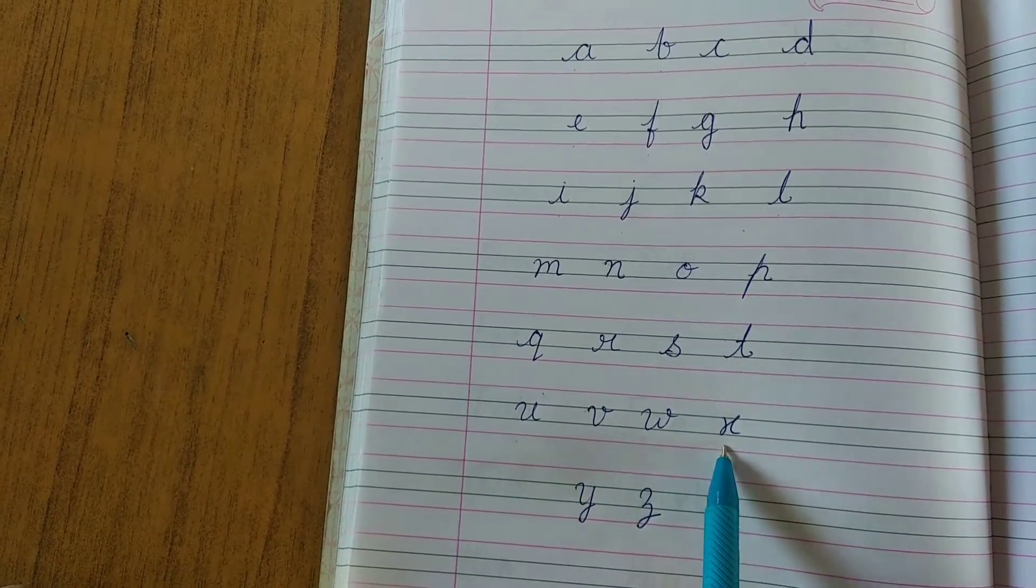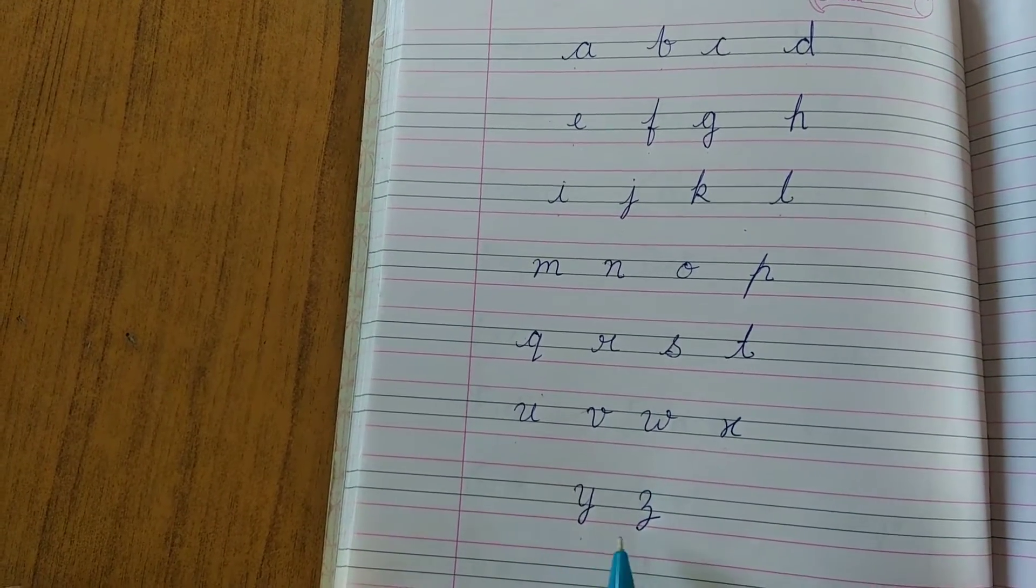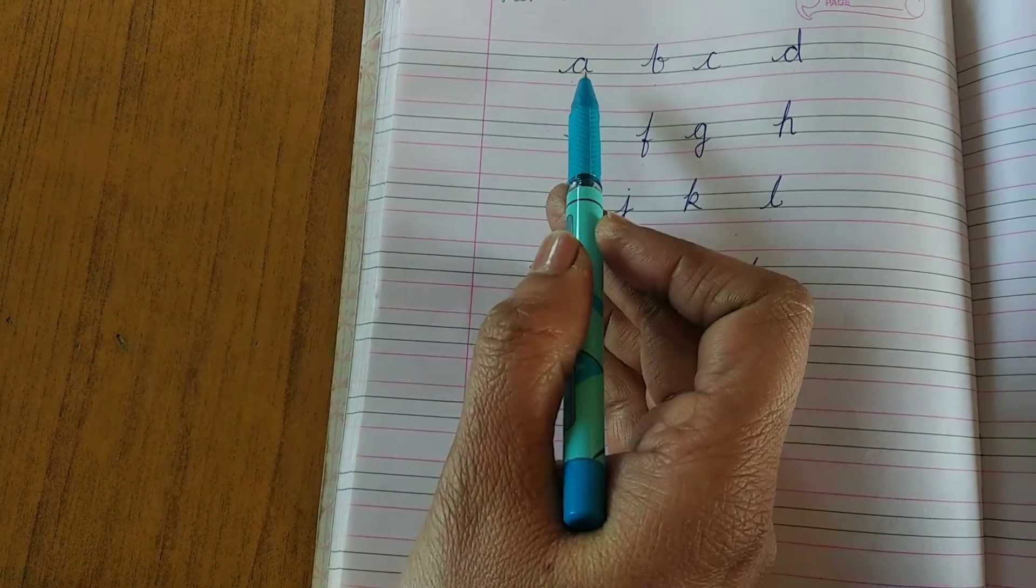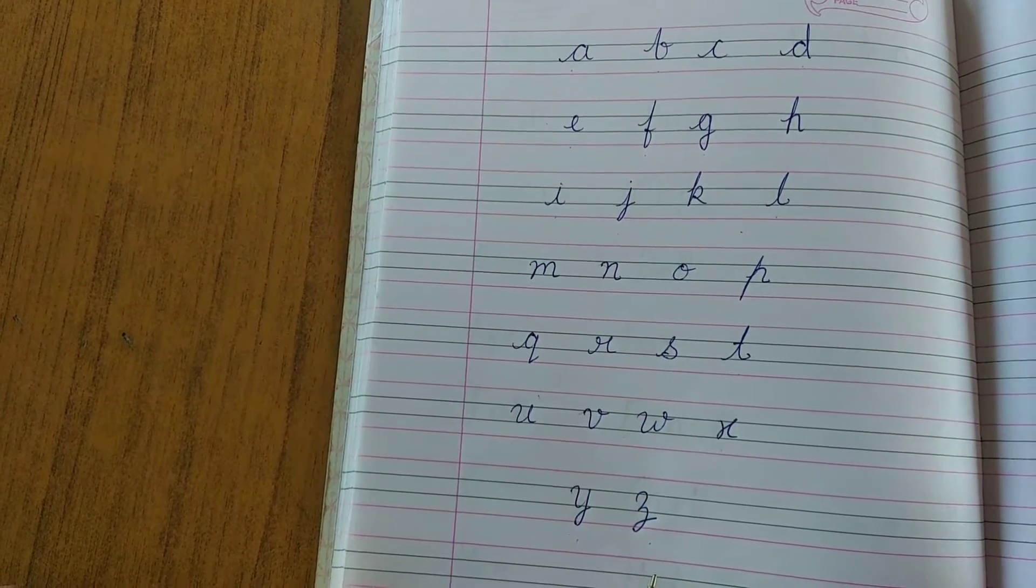V, W, X, Y, Z. These are cursive small letters, okay?